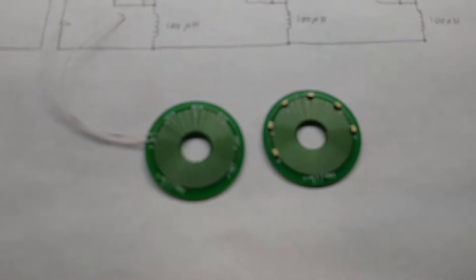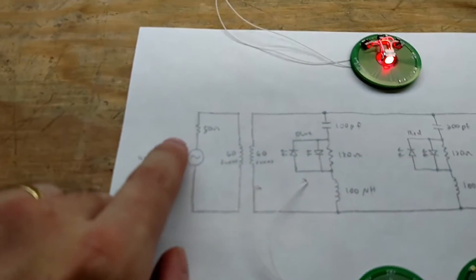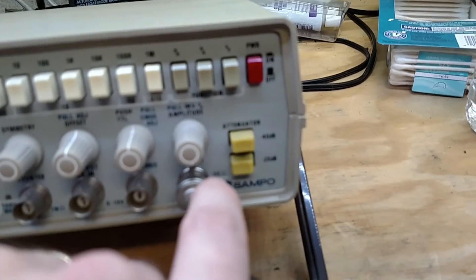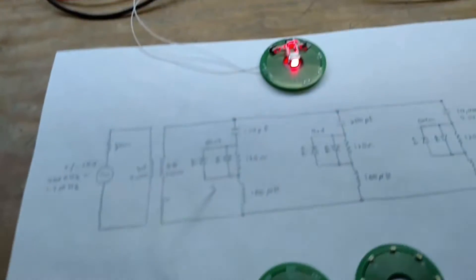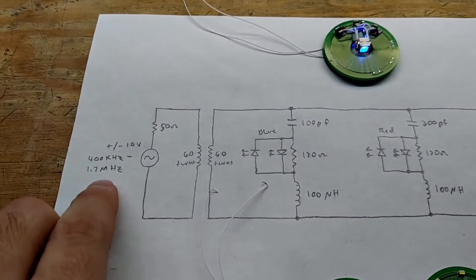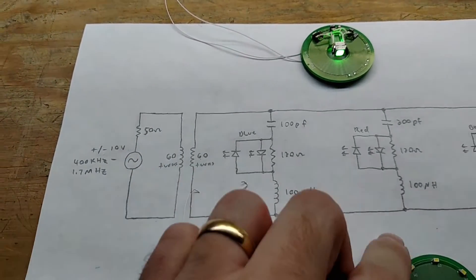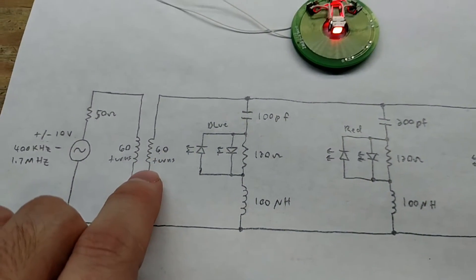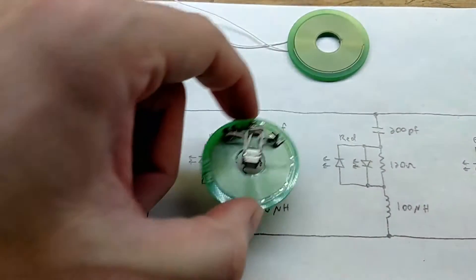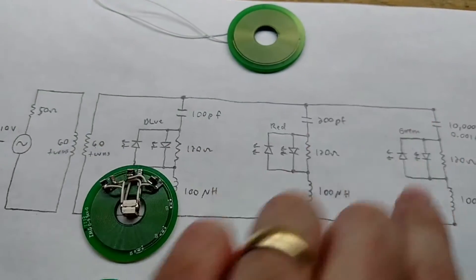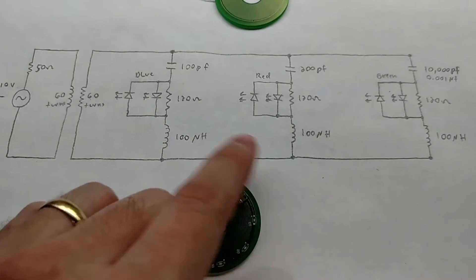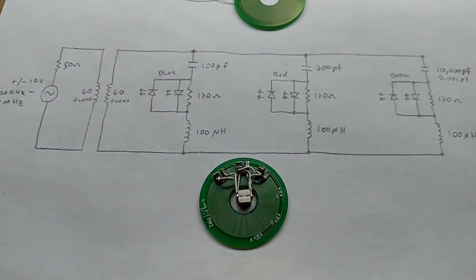The sending coil over here, I've soldered a couple wires where one of the LEDs would go. We're feeding that with plus or minus 10 volts. We have a 50 ohm resistor in series with the coil, the 50 ohm resistor built into the function generator.